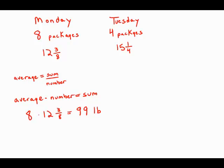If we take the sum of all the packages on Tuesday, four times 15 and a quarter, that is 61 pounds. That means the total weight, we take all of the packages together, the total weight of them will be 160 pounds.